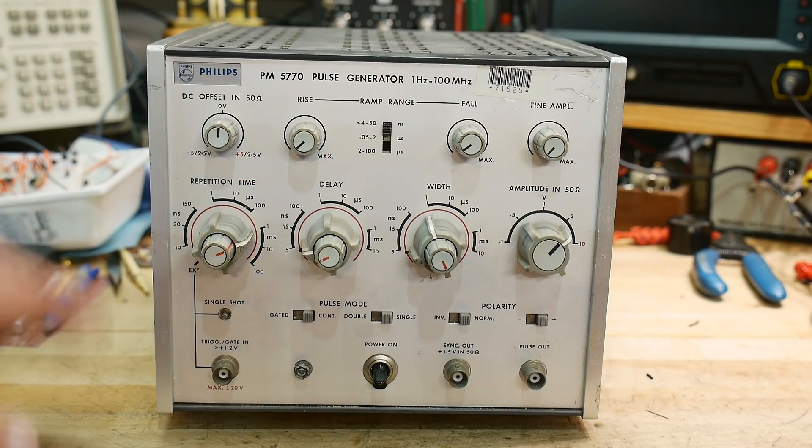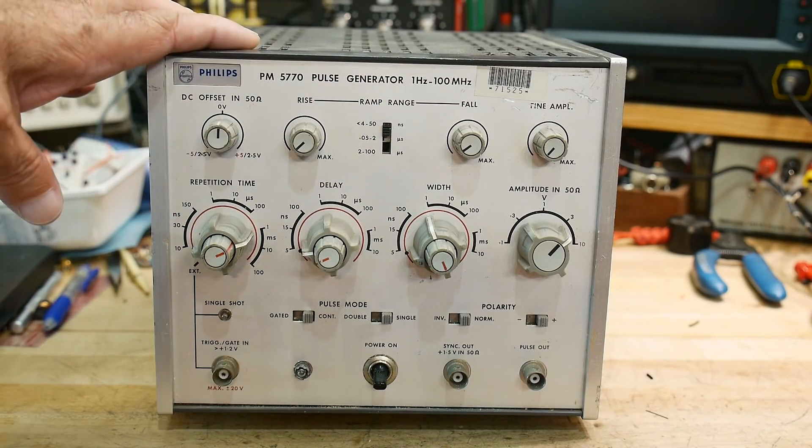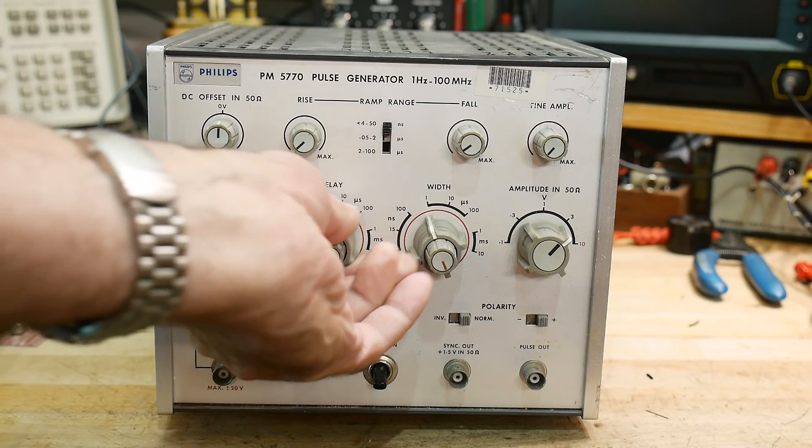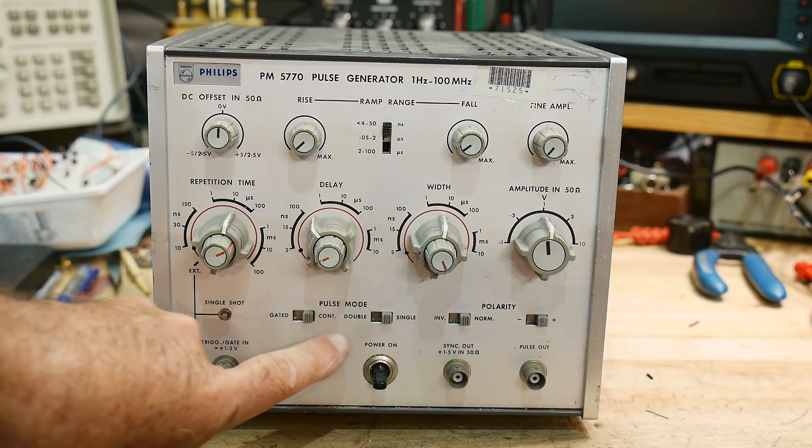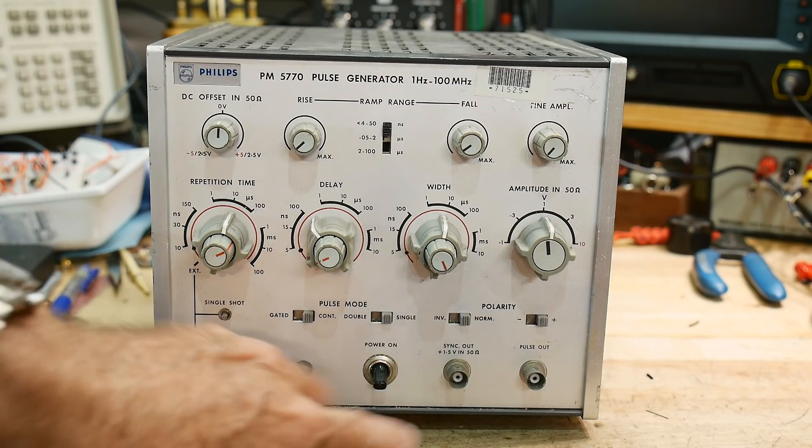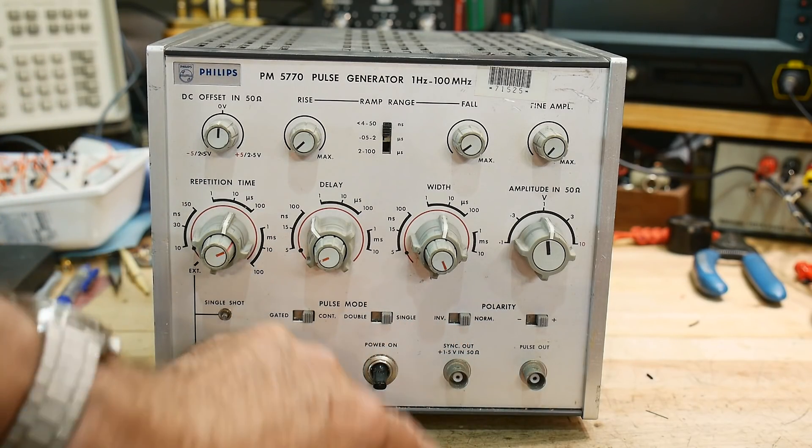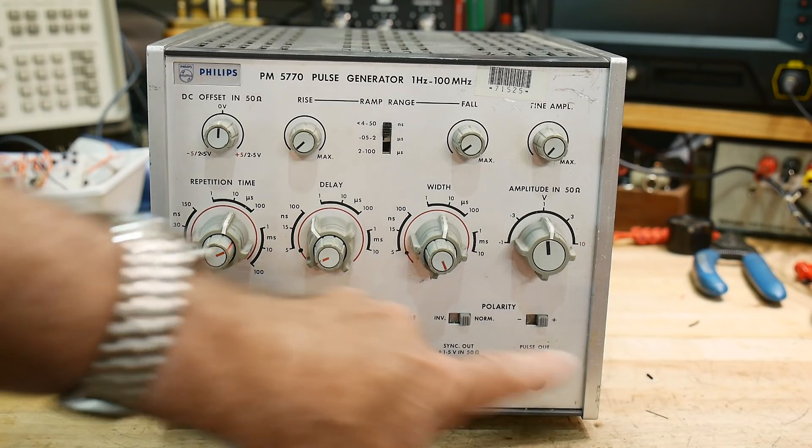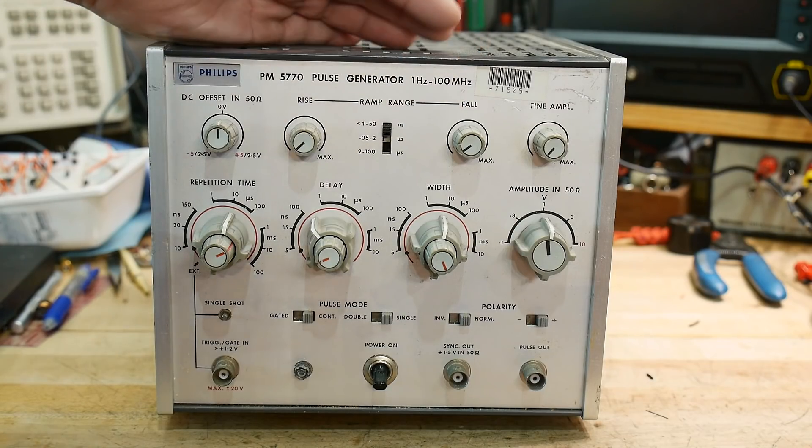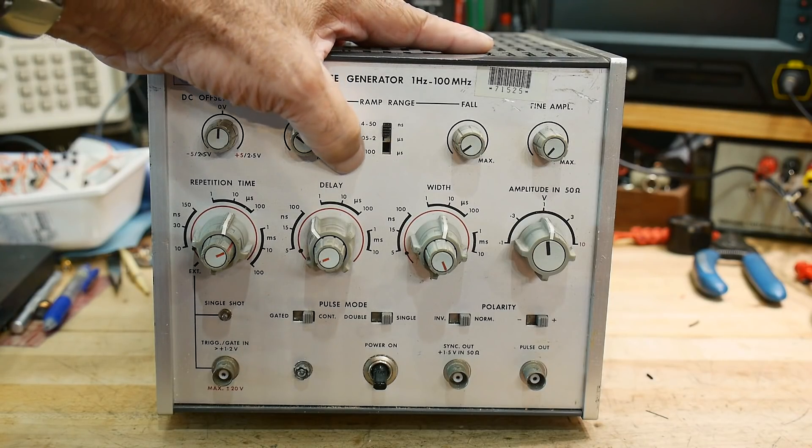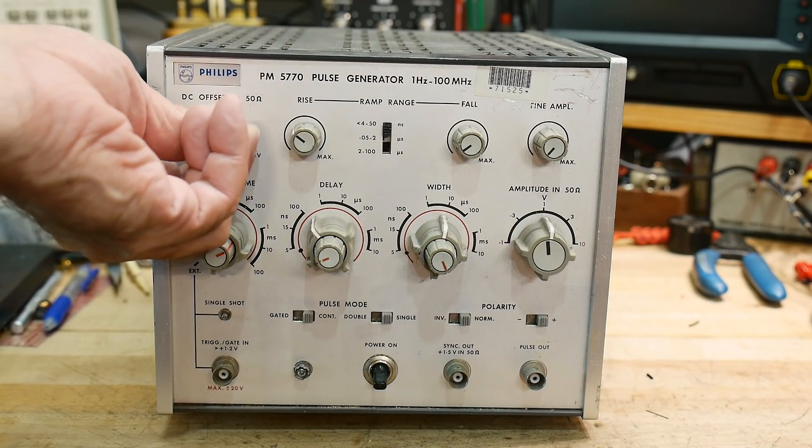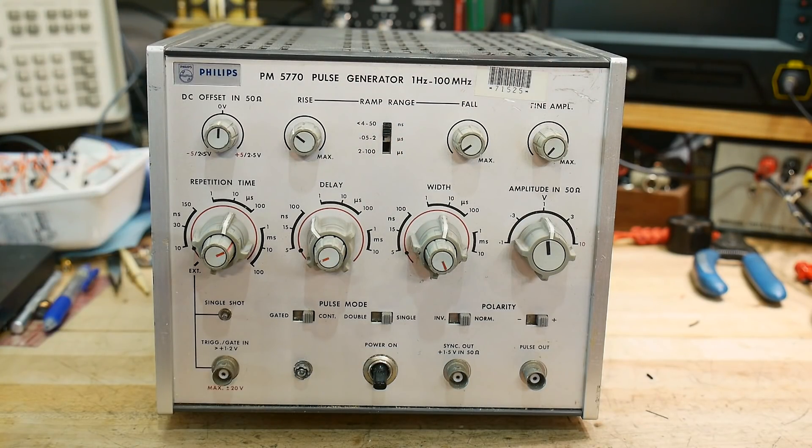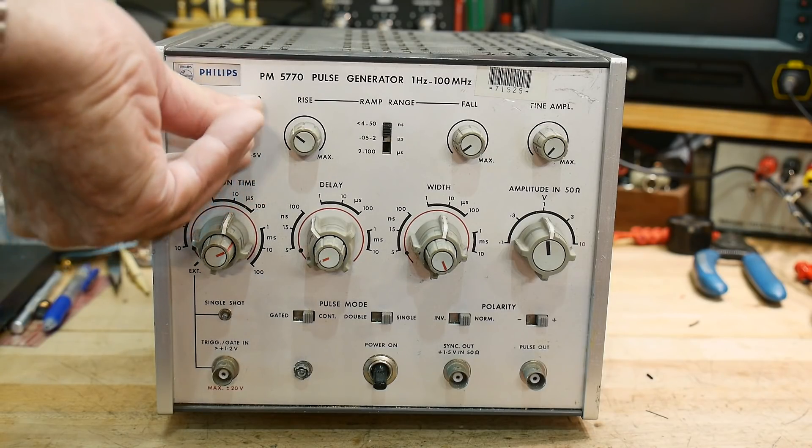All right. This is freebie number one. It's a Philips pulse generator, one hertz to 100 megahertz. And let's see, rep rate, delay, width and amplitude into 50 ohms. So that's pretty cool. Gated or continuous pulses, double or single pulses, inverted or normal pulses and then plus and minus sync out. Sync out and pulse out. And then rise and fall ramp rates.